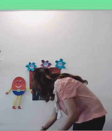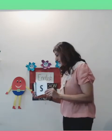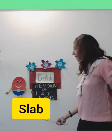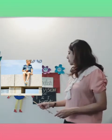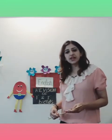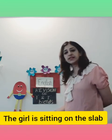Now we move on to our last word. What sound does this letter make? S. And what sound does this letter make? L. And together we hear the sound 'sl'. What word can we form with this? 'Sl' and 'ab' makes slab. Slab means a flat piece of stone or wood. The girl is sitting on the slab.